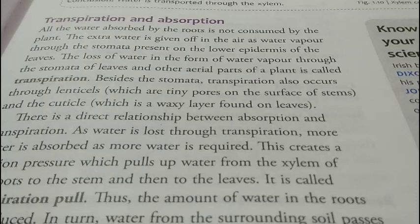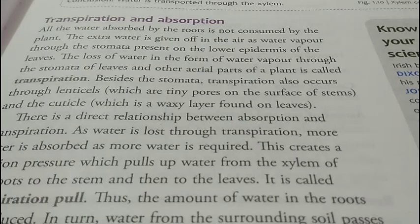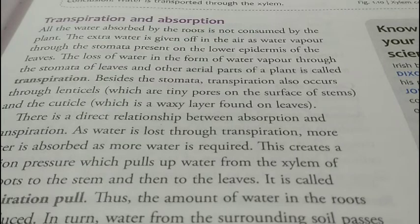Cuticular transpiration में cuticle की मदद से transpiration होता है — पत्तों के ऊपर एक waxy layer होती है जिसकी वजह से वो चिकने दिखते हैं, यह cuticle है। Cuticle से transpiration सबसे कम होता है। इन अलग-अलग parts से transpiration होती है जिसके वजह से aerial parts of the plant excess water loss करते हैं और एक suction pressure create होती है जो root से water और minerals को ऊपर खींचती है — इसे transpiration pull कहते हैं।